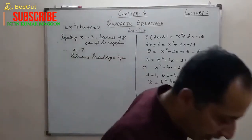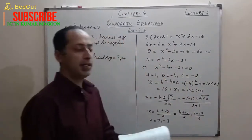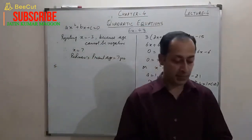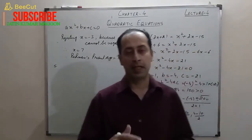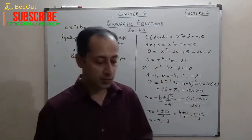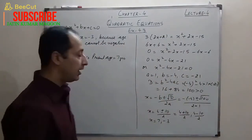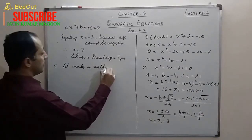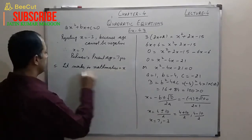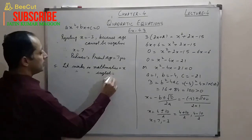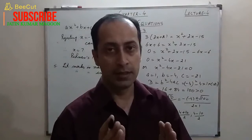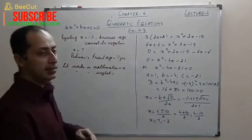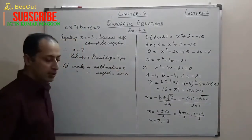Now one more question — related to marks. In a class test, the sum of Shefali's marks in mathematics and English is 30. Let marks in mathematics = x, therefore marks in English = 30 − x, since their sum is 30. For example, if one subject is 10, the other is 20; if one is 12, the other is 18.